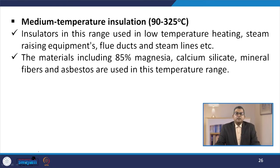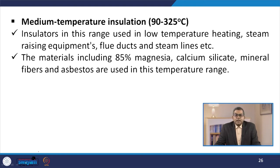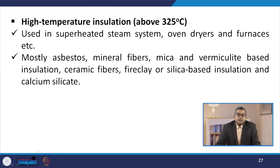Medium temperature insulation ranges from 90 to 325°C, used in low-temperature heating, steam-raising equipment, fluid ducts, and steam lines. Materials including 85% magnesia, calcium silicate, mineral fibres, and asbestos are used in this temperature range. The last category is high temperature insulation, above 325°C, used in superheated steam systems, oven dryers, and furnaces. Materials include asbestos, mineral fibre, mica, vermiculite-based insulation, ceramic fibres, fire clay or silica-based insulation, and calcium silicate.